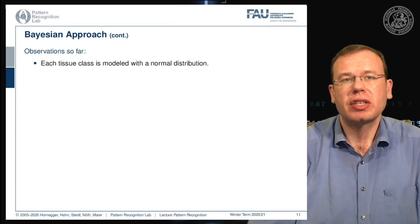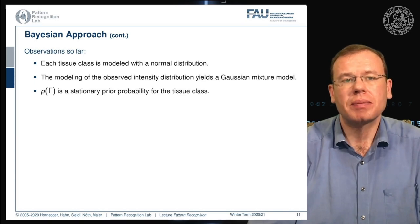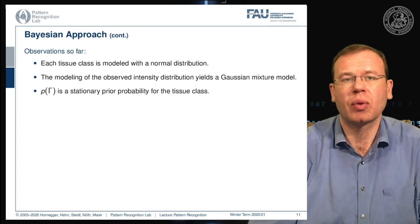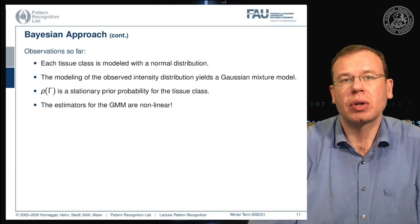Each tissue class is modeled with a normal distribution, yielding a Gaussian mixture model overall. The prior is a stationary prior for the tissue class, so observations of similar anatomy produce a similar prior. The estimators for the Gaussian mixture model are non-linear.